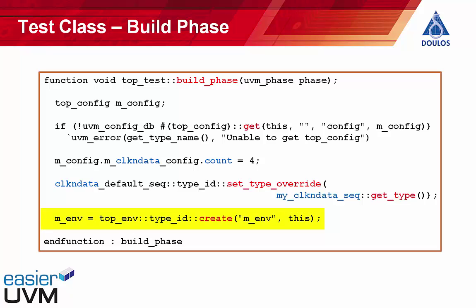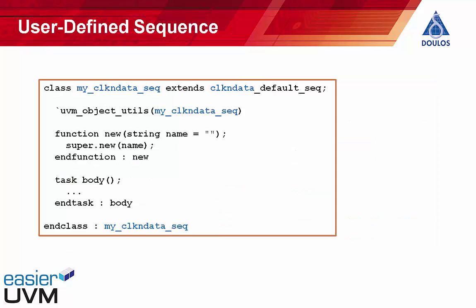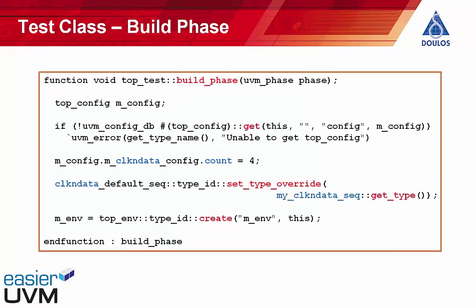Let's say a little bit more about factory overrides. What we're doing is replacing a default sequence with a user-defined sequence. The alternate type provided in the factory override has to extend the base type — so here we provide my_clock_and_data_sequence that extends clock_and_data_default_sequence. The replacement object always has to extend the object it's replacing whenever you do a factory override. If you wanted to add a directed test, you might do this by replacing an existing sequence with a user-defined sequence to do something very specific.